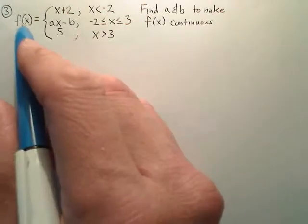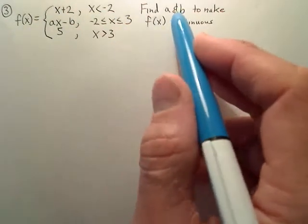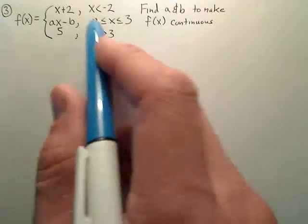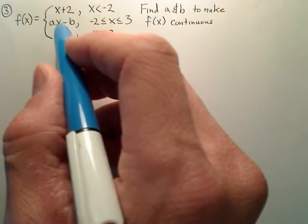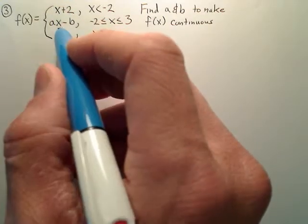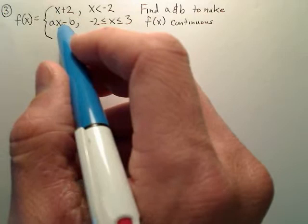If I want to find the value of a and b to make f of x continuous, what I first have to do is set the first and second graphs, or pieces of the piecewise, equal so they intersect.